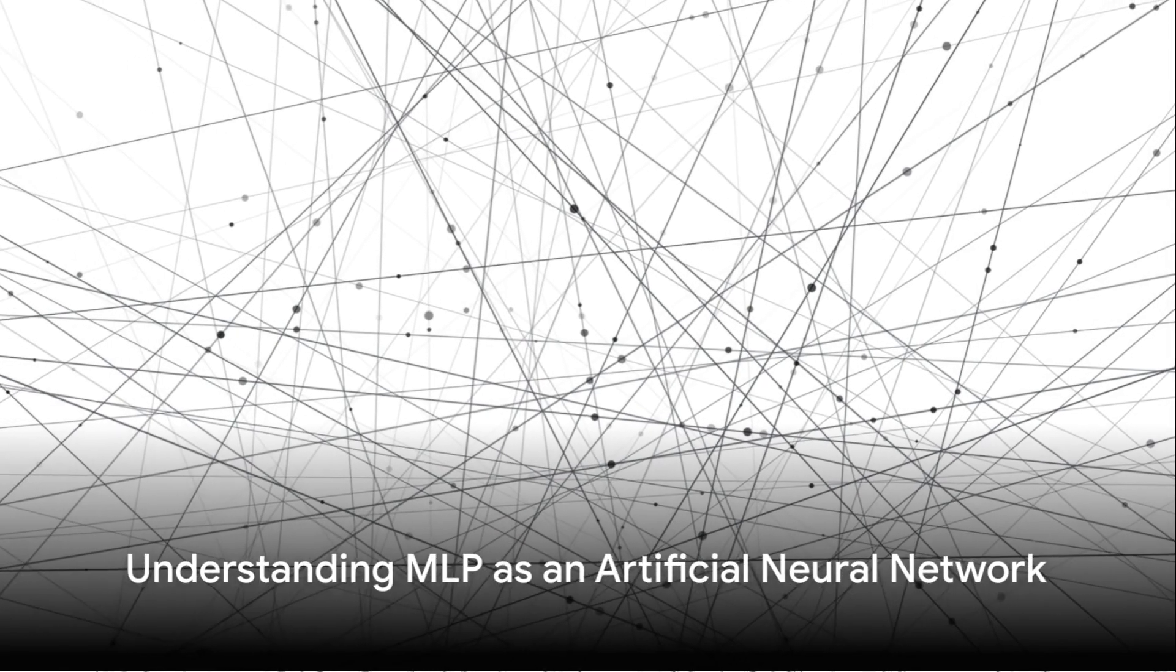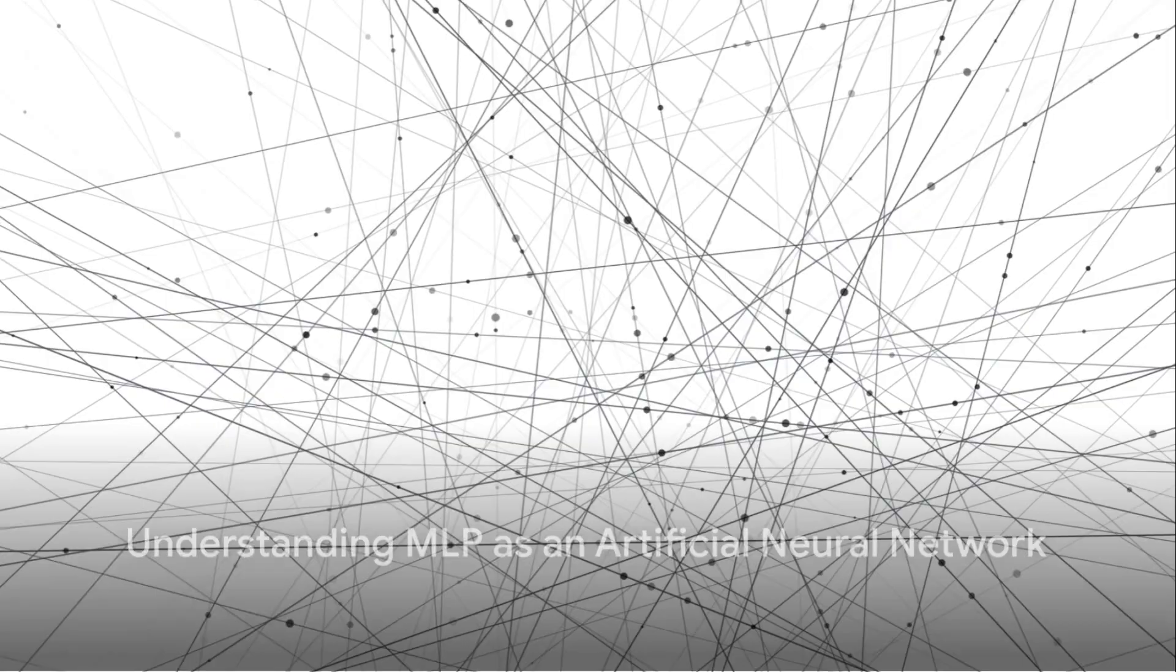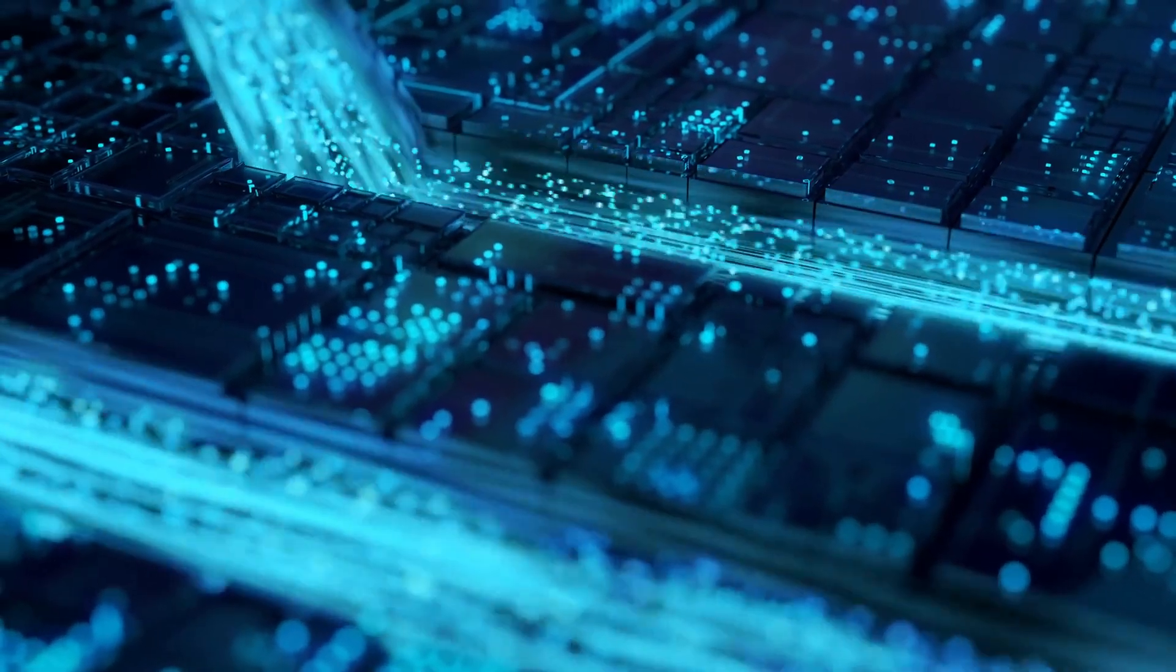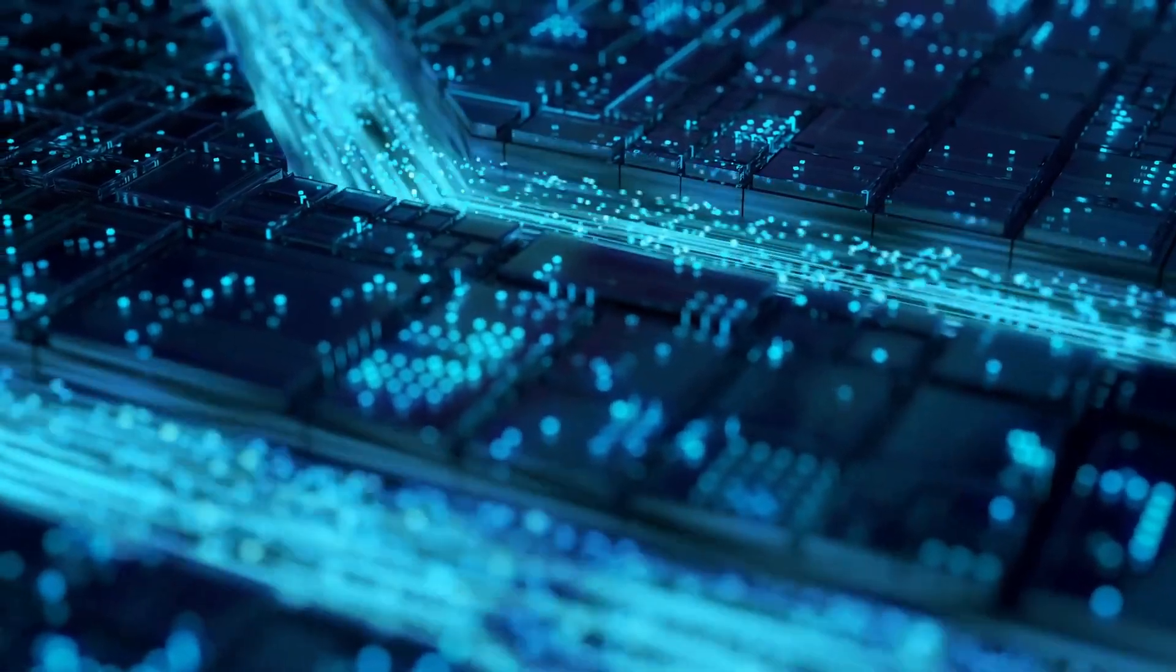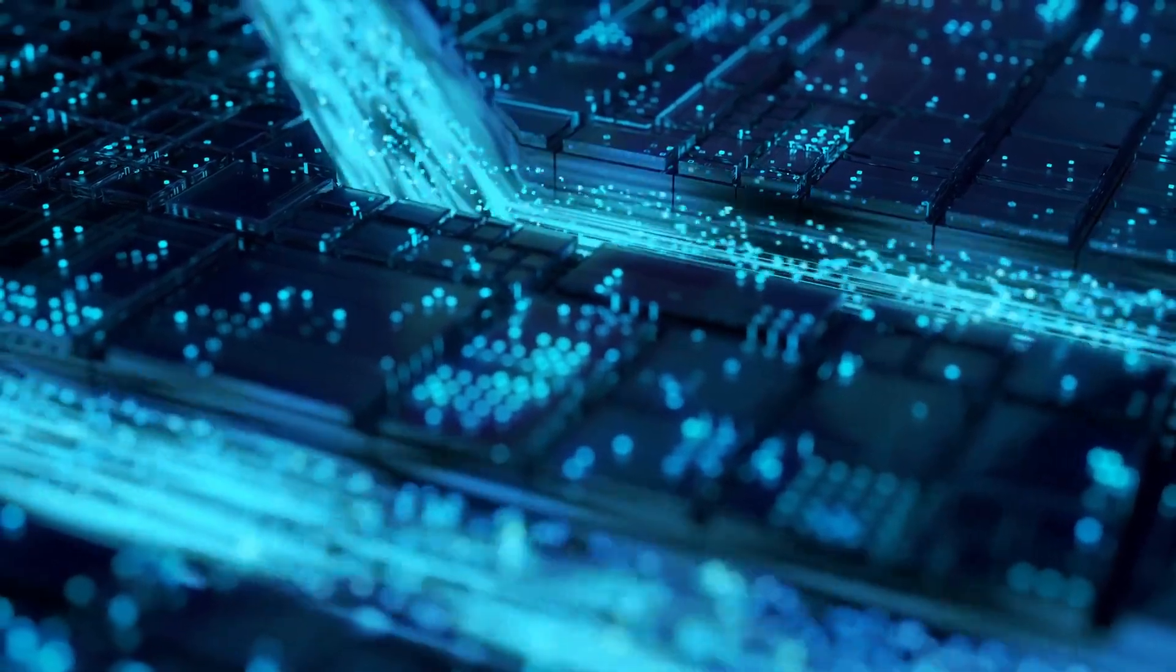Think of MLP as a type of artificial neural network. It's a little like a team, with each player having a specific role. The players, in this case, are called neurons, and they're organized into layers.